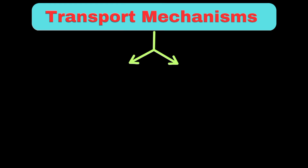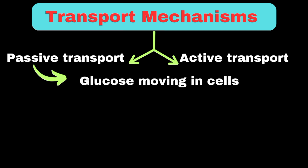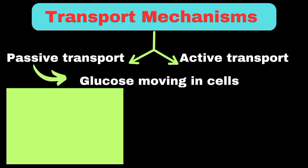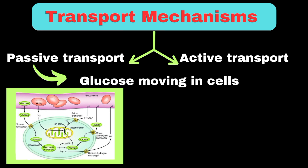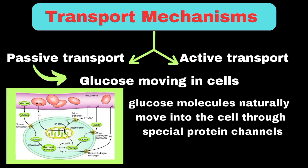Transport across the cell membrane can happen in two main ways: passive transport and active transport. In passive transport, when there's more glucose outside the cell than inside, glucose molecules naturally move into the cell through special protein channels — like water flowing downhill, requiring no energy. This type of movement from an area of higher concentration to lower concentration is called diffusion.